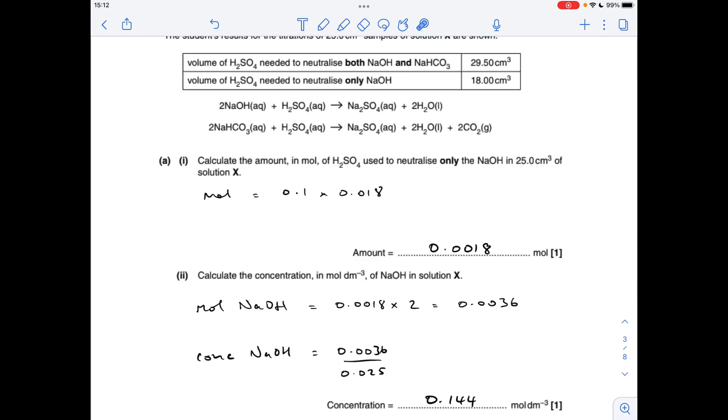So to get the concentration of the sodium hydroxide in solution X, first thing we need to do is work out how many moles of sodium hydroxide we've got. The ratio in the equation tells us that for every mole of sulphuric acid, there's two moles of sodium hydroxide reacting. So we double the moles of sulphuric acid. That's in the 25 cm cubed sample. Concentration is moles divided by the volume, so we get 0.144 moles per decimetre cubed. Remember that volume needs to be in decimetres cubed.